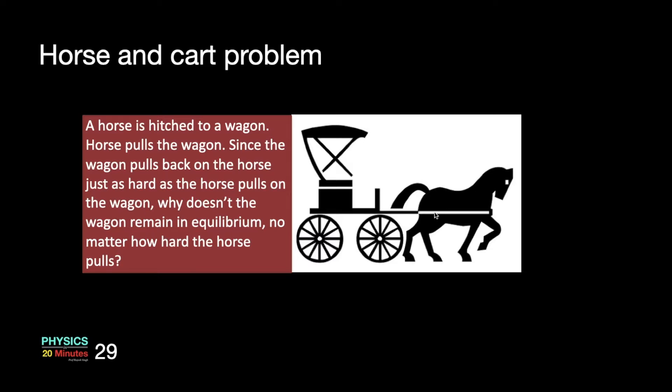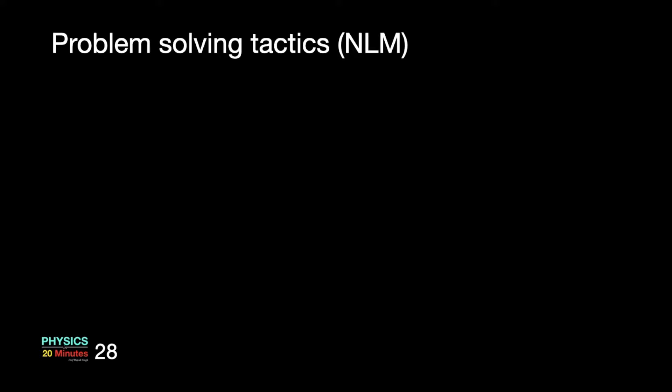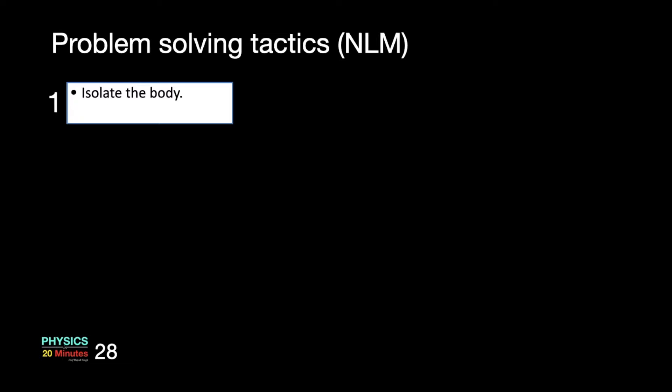Before we answer this problem, let us learn some of the problem solving tactics using Newton's laws and then we can utilize some of those tactics to solve this problem. The first step towards solving problems using Newton's laws is you isolate the body — you choose the body to which you are applying Newton's laws. In a given problem there could be a number of interacting bodies. You have to be very clear in your mind which body you are applying Newton's laws to. Sometimes, if the picture is not very clear, draw a rough diagram and encircle the body. This helps a lot.